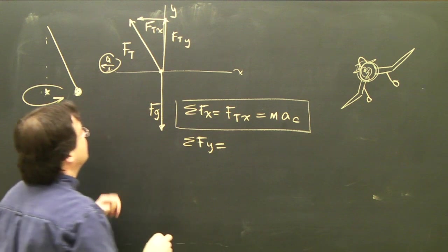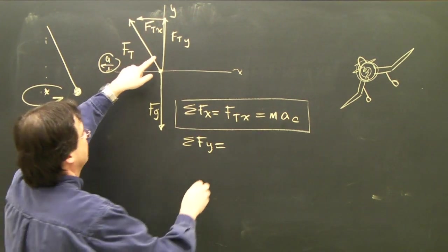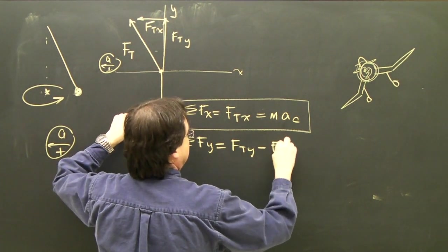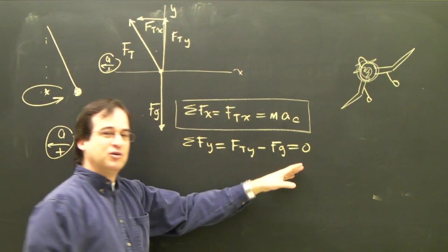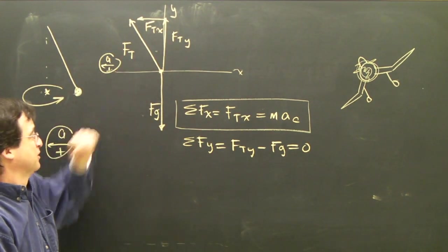In the y-direction, you've got, it's not accelerating the y-direction, so I can call up positive. ft,y minus fg equals 0. Why is that 0? Because it's not accelerating the y-direction, so ma is 0 because there's no acceleration.